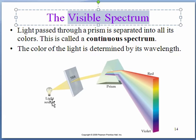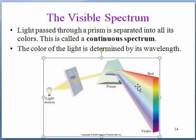If we have a white light source and we put that white light source through a prism, what the prism does is it separates out the white light into its individual colors.